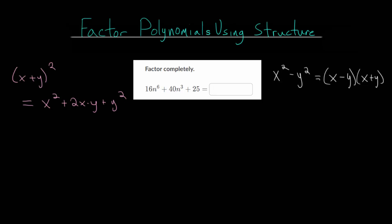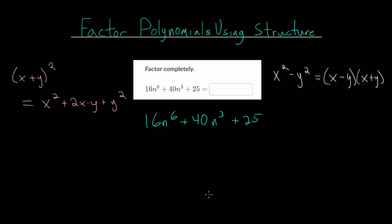Let's start by rewriting our example. We have 16n to the 6th plus 40n to the 3rd plus 25. A good way to approach these problems is to notice if you can rewrite any of the terms as something squared, since that's the structure we'll use in both of these formulas. For instance, 16n to the 6th, we can rewrite that as 4n to the 3rd squared.